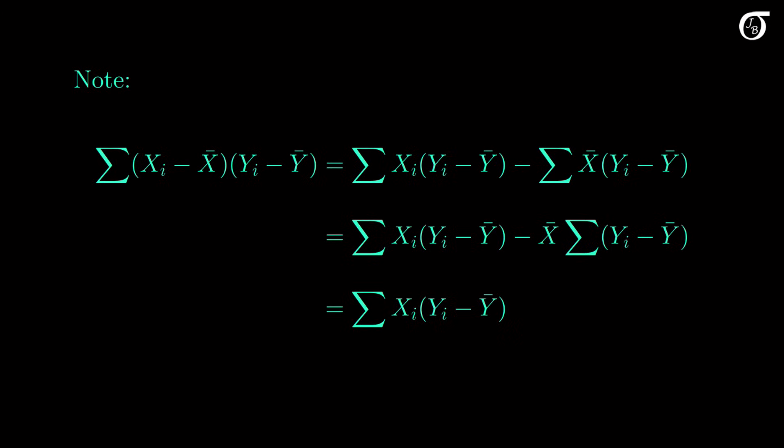Also note that we could easily swap the roles of x and y, so it is also equal to the sum of y sub i times x sub i minus x bar. This identity comes in handy in some proofs and derivations.